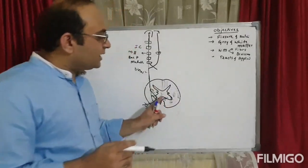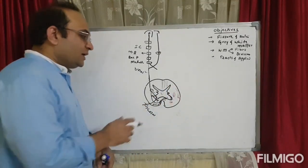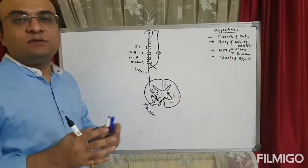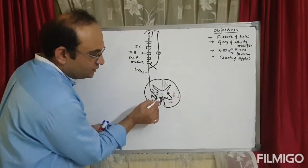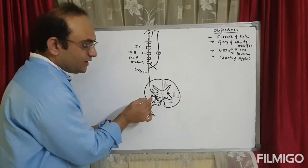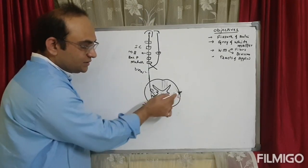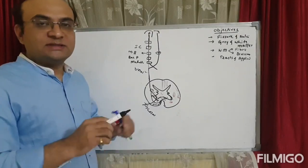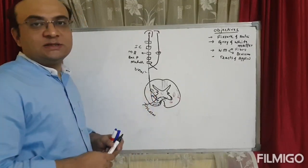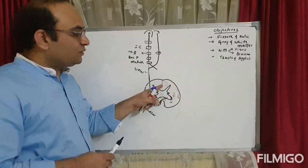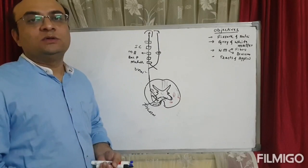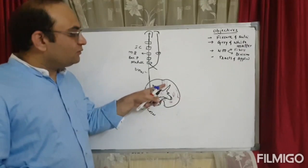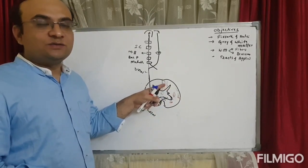Applied aspects of ascending fibers: Syringomyelia — cavities appear in and around the central canal, growing larger and damaging fibers crossing in front of the gray matter. The lateral and anterior spinothalamic tract fibers cross here, leading to loss of pain and temperature sensation at the segmental level. Tabes dorsalis is syphilitic degeneration of the posterior column fibers, leading to loss of vibration, tactile discrimination, pressure, two-point discrimination, and conscious proprioception.